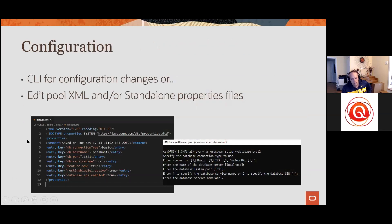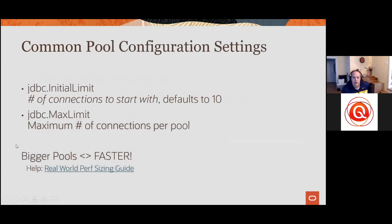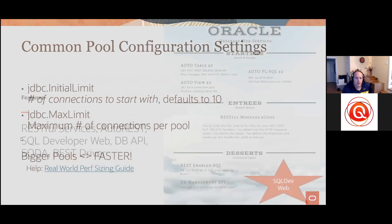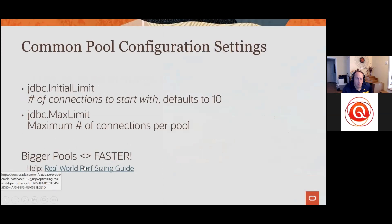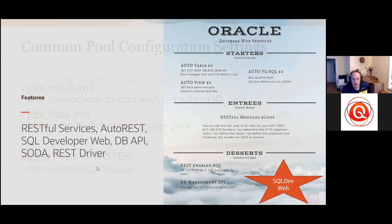Configuration files aren't a mystery — you can view them in the config directory. They're documented in the Oracle docs and contain what you'd expect: basic JDBC URL parameters for connecting to the database. Toon Koppelaars on the Real World Performance team has a great set of white papers and YouTube videos on how to properly size Java connection pools.